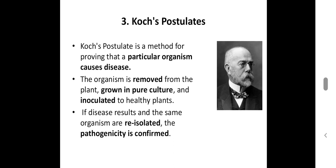Koch's postulates. Robert Koch, a scientist, proved a method that a particular organism causes a disease. There are four principles: first, association; second, isolation; third, inoculation; and fourth, re-isolation. In this case, pathogenicity is confirmed when the pathogen that is isolated and re-isolated from the typical culture or sample is the same.